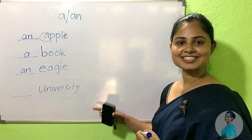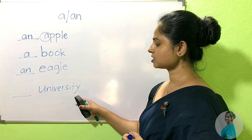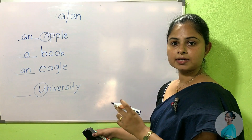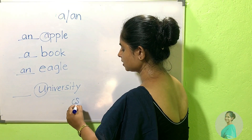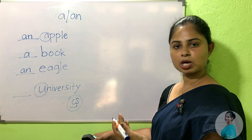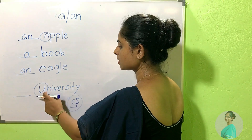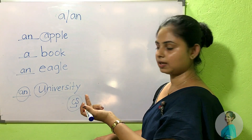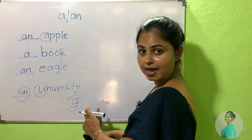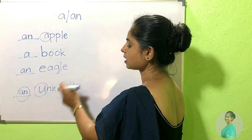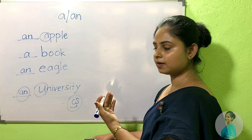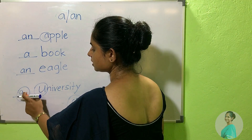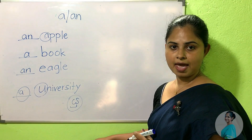University. Can anyone give the answer? Also U is a vowel letter, but there is no sound like 'U' — it sounds like 'yoo'. So we can't use 'an' here.